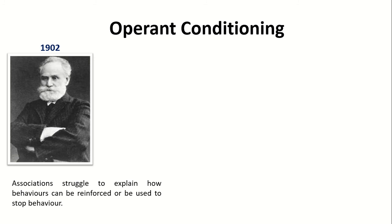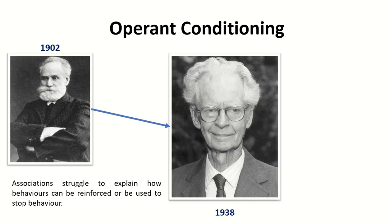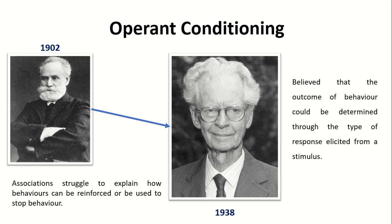However, there's a major issue with classical conditioning. When we learn through associations, the theory is quite basic. Associations struggle to explain how behaviors can be reinforced or used to stop behaviors. Pavlov's theory struggles to explain why certain behaviors we actively seek out and certain behaviors we actively avoid through learning through association. This is where, in the 1930s, a man called B.F. Skinner went back to Pavlov's original theory and started to address some of these concerns.